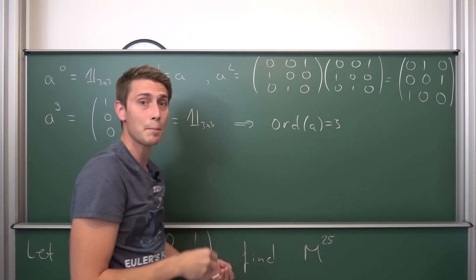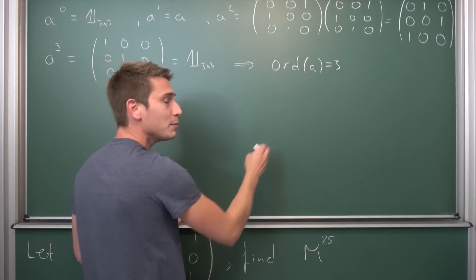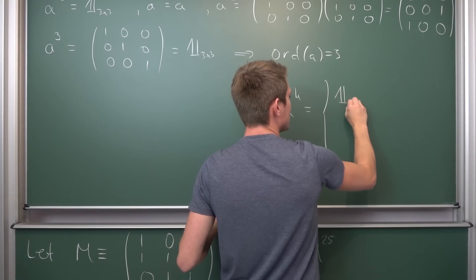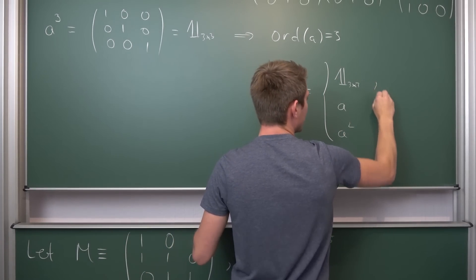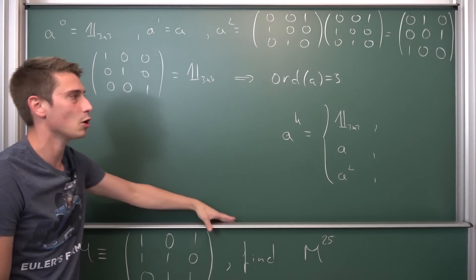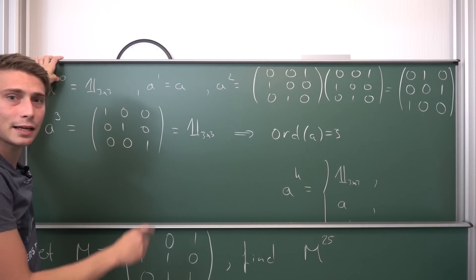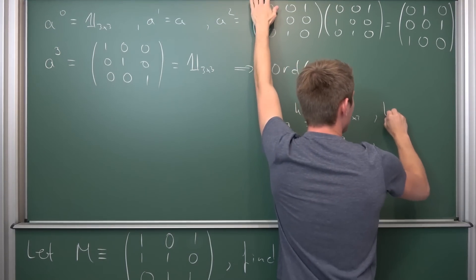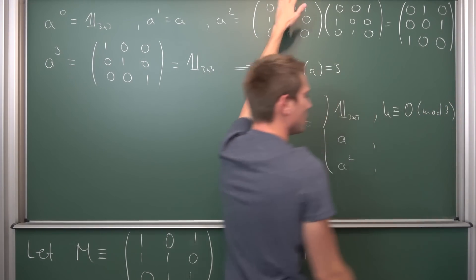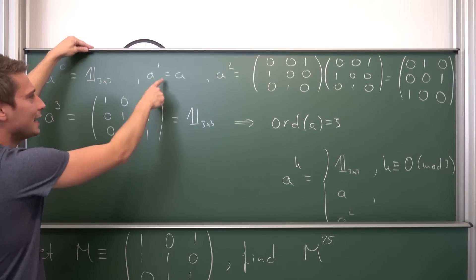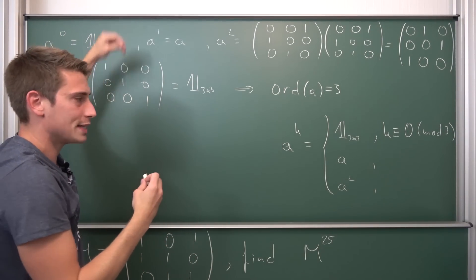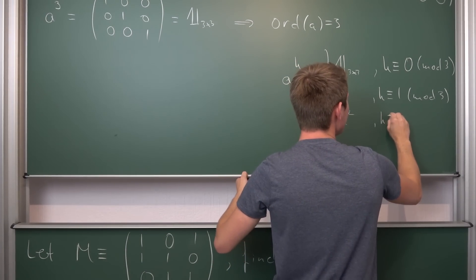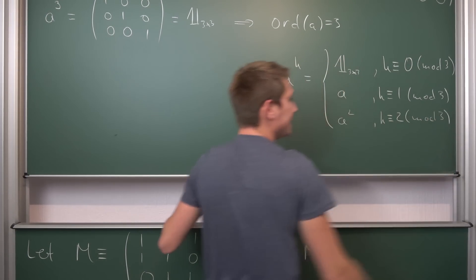We can put this into nicer terms by doing some casework. What is A to the kth power going to be? We consider three cases: we can get out the identity matrix, A itself, or A squared. The identity matrix appears whenever k is congruent to 0 modulo 3 - so 0, 3, 6 are all 0 mod 3. We get simply A whenever k is congruent to 1 modulo 3 - the 1st, 4th, 7th powers. And the last case is when k is congruent to 2 modulo 3.